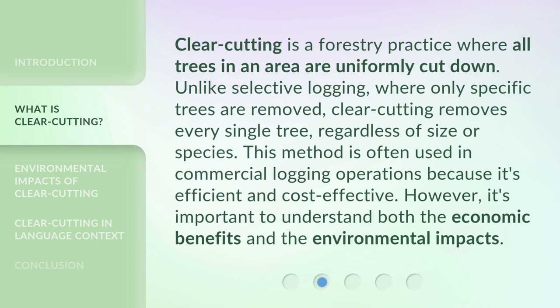Clear cutting is a forestry practice where all trees in an area are uniformly cut down. Unlike selective logging, where only specific trees are removed, clear cutting removes every single tree, regardless of size or species. This method is often used in commercial logging operations because it's efficient and cost-effective. However, it's important to understand both the economic benefits and the environmental impacts.